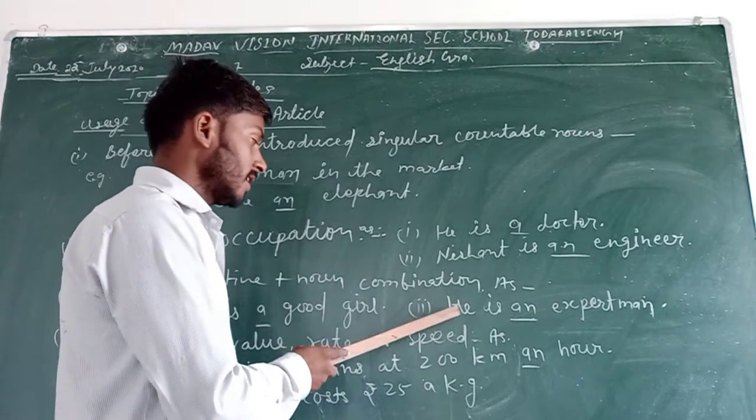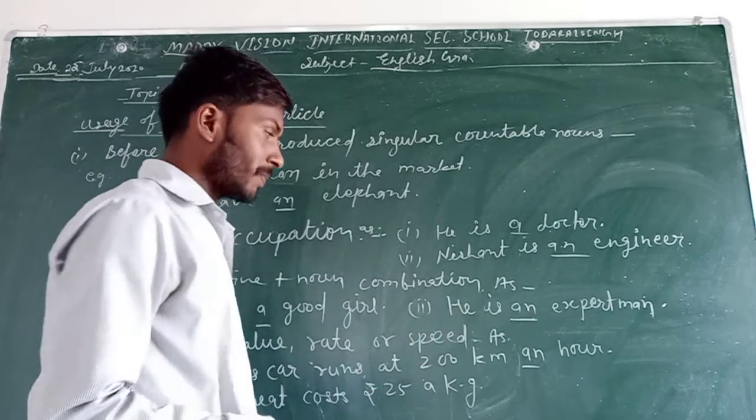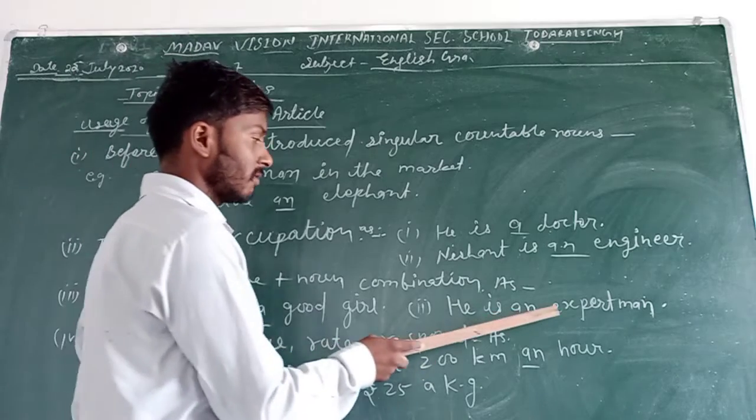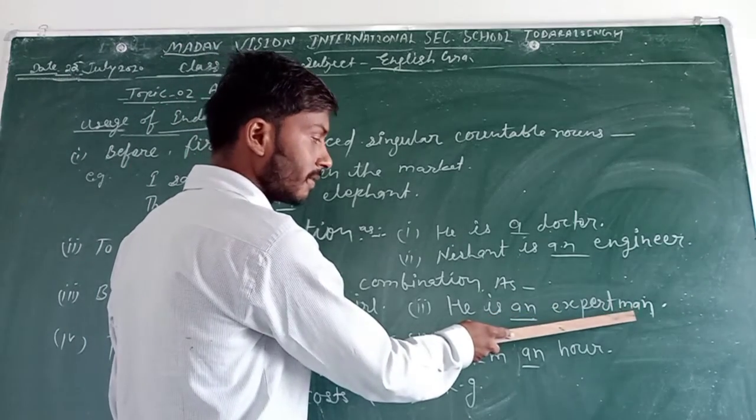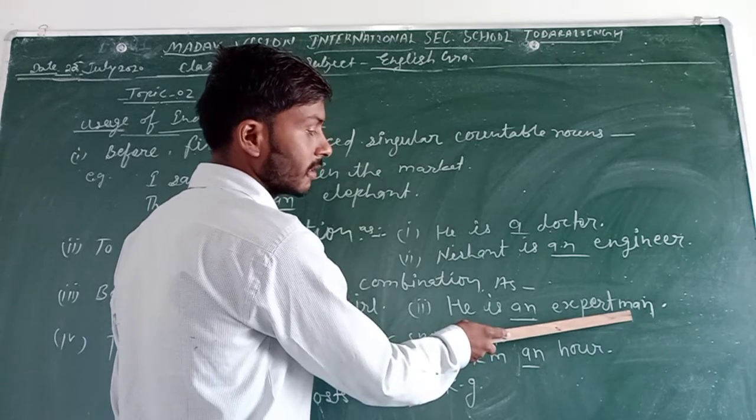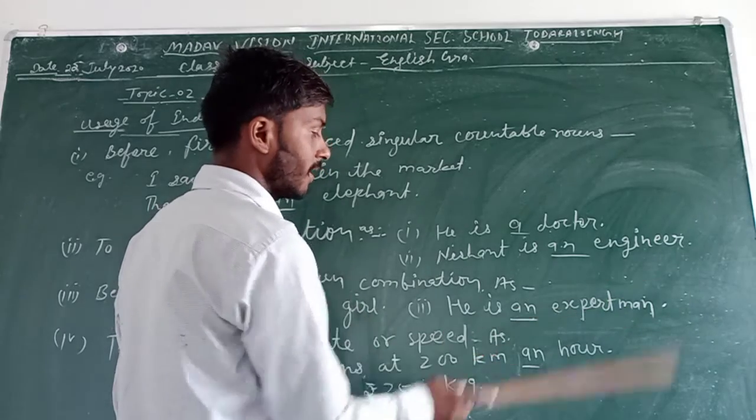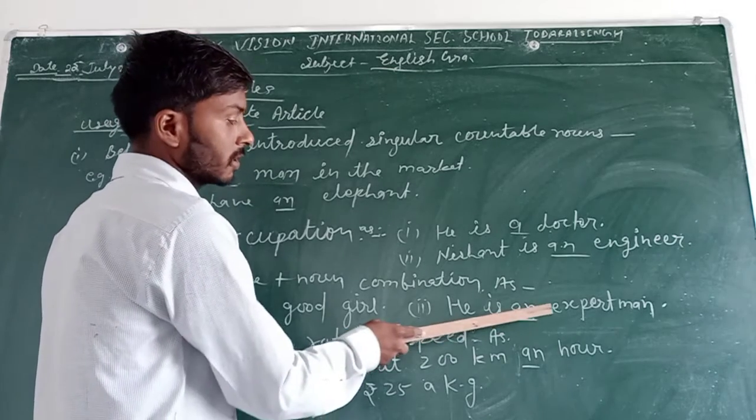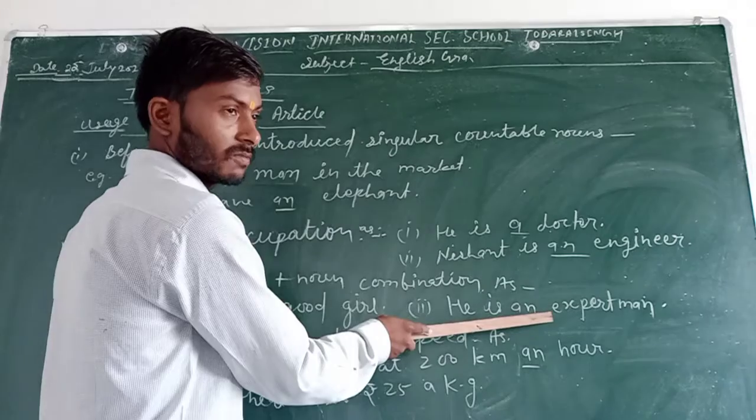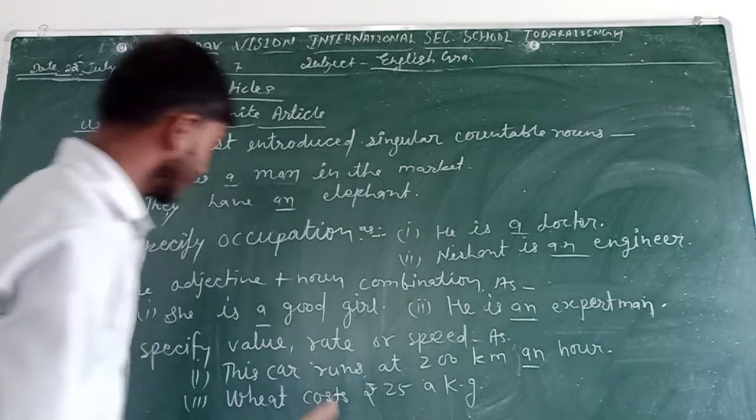In this sentence, he is an expert man. In this noun, expert is an adjective and word is man. So we will use an because E is vowel sound.